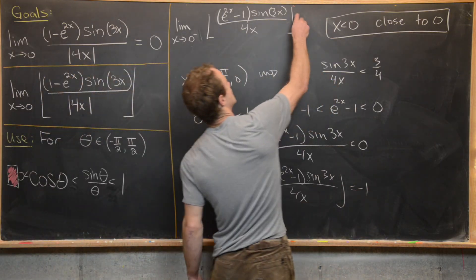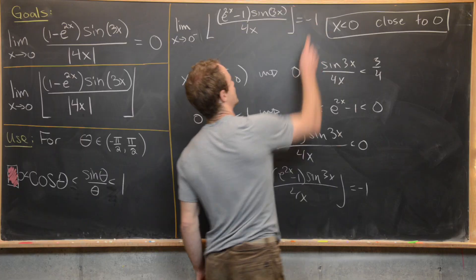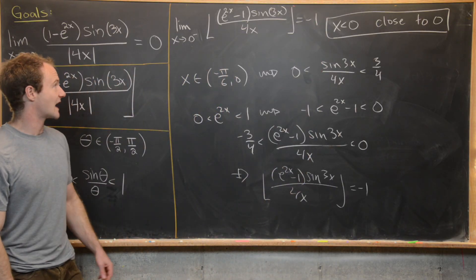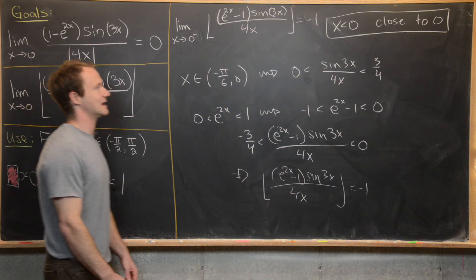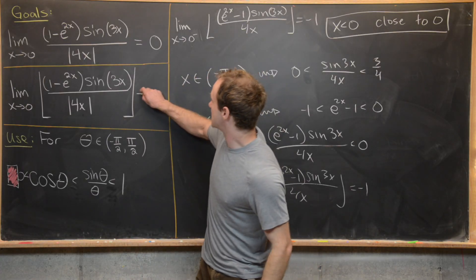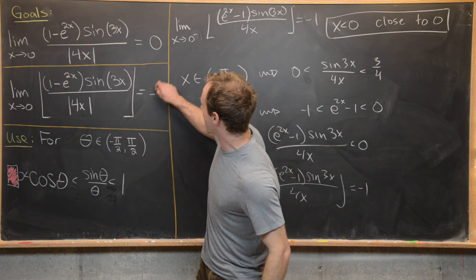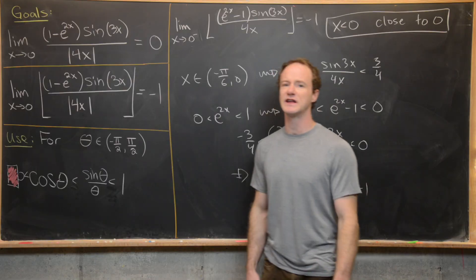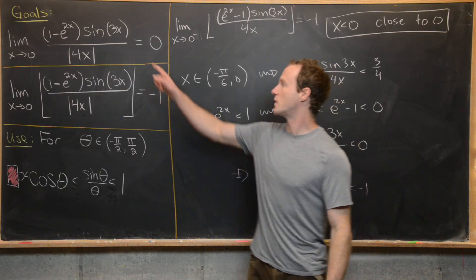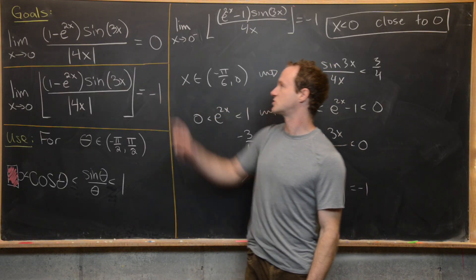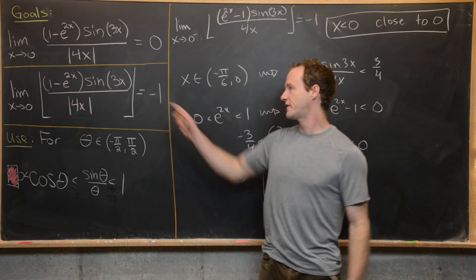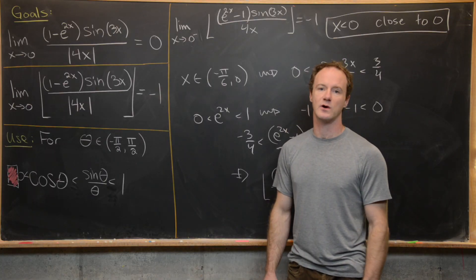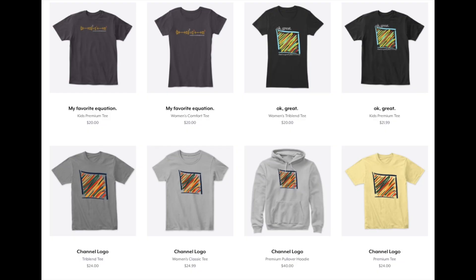Since both the right-handed and left-handed limits equal −1, the full limit is −1. It's interesting: without the floor function, we got a limit of 0; with the floor function, we got a limit of −1.